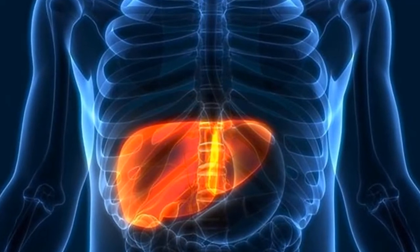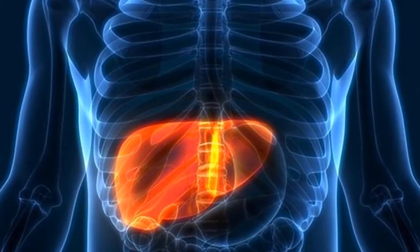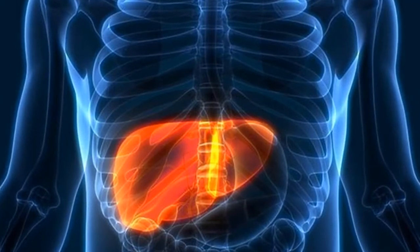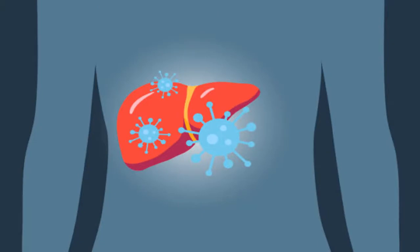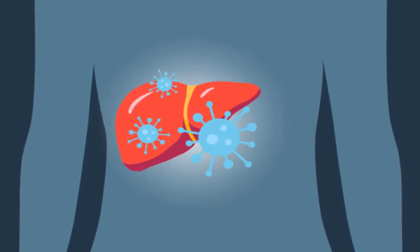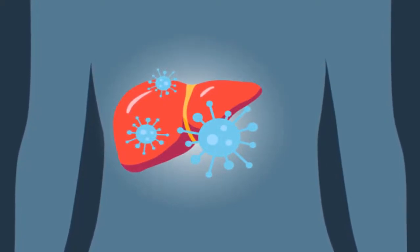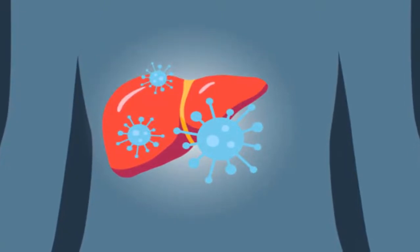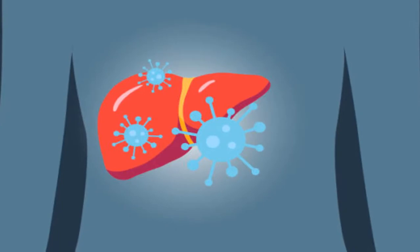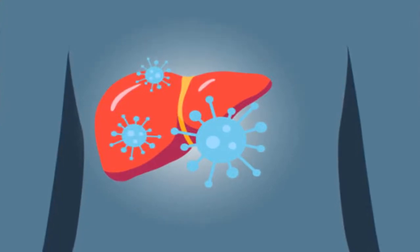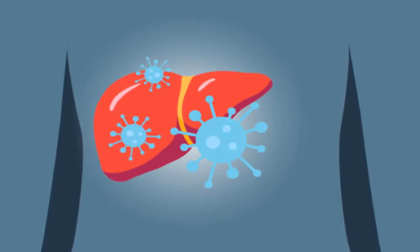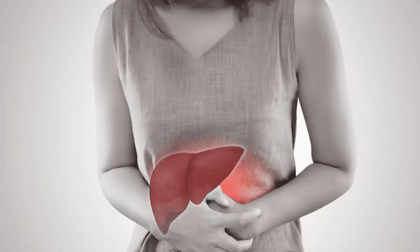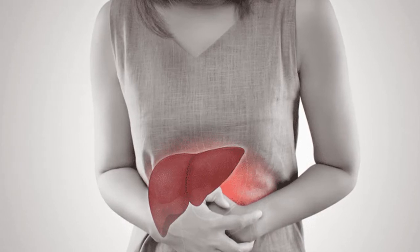A different virus is responsible for each type of virally transmitted Hepatitis. Your liver is located in the right upper area of your abdomen. It performs many critical functions that affect metabolism throughout your body, including bile production which is essential to digestion, filtering of toxins from your body, excretion of bilirubin, cholesterol, hormones and drugs, breakdown of carbohydrates, fats and proteins, activation of enzymes which are specialized proteins essential to body function, storage of glycogen, minerals and vitamins A, D and K, synthesis of blood proteins such as albumin, and synthesis of clotting factors.